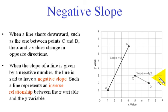Now, when a line slants downward, such as this one that I've just circled between points C and D, the X value and the Y values change in opposite directions.